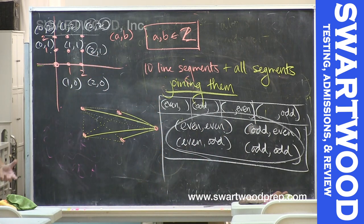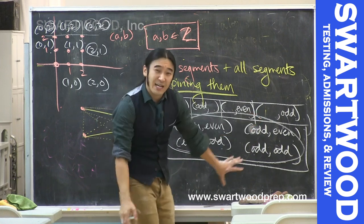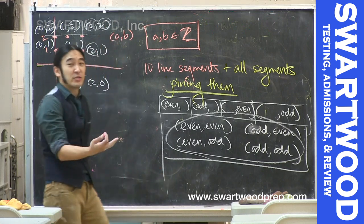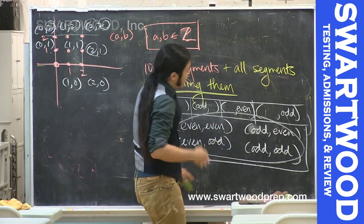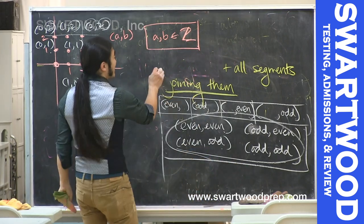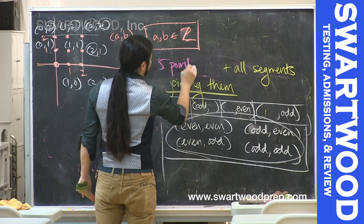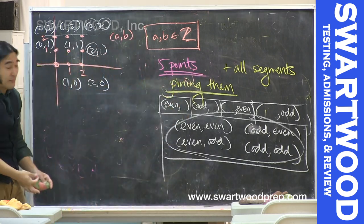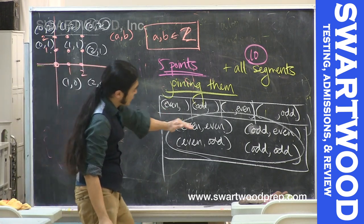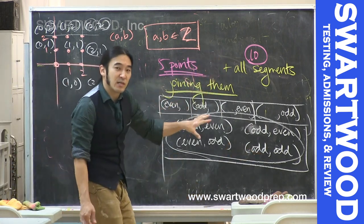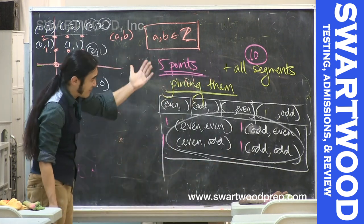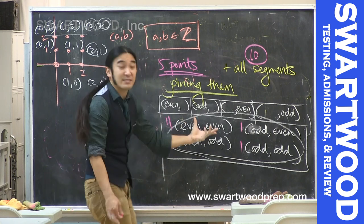If you didn't find a solution already, you might want to organize points into these four different categories. Remember the hints: categorize by parity and use the Pigeonhole principle. Because you have five points but only four slots, at least one of those slots must have two points in it. If you spread them out one per category, you still have to place that fifth point, so some category must contain two points.